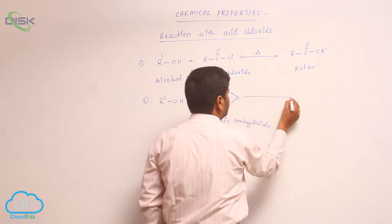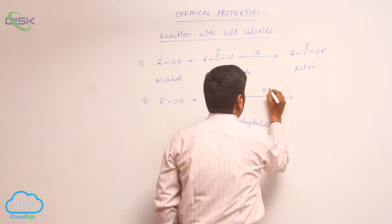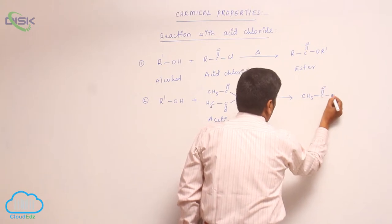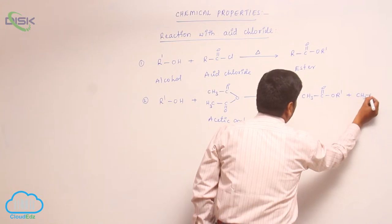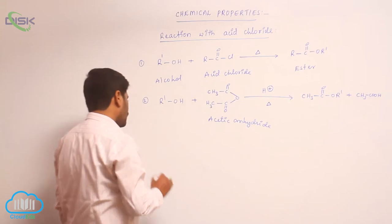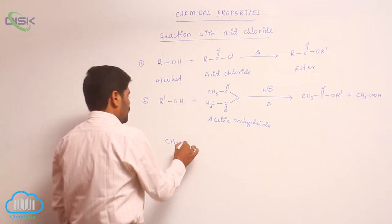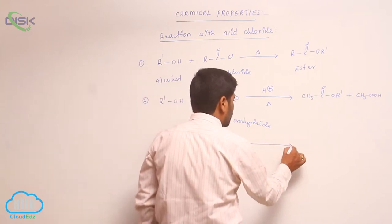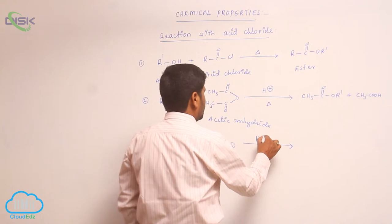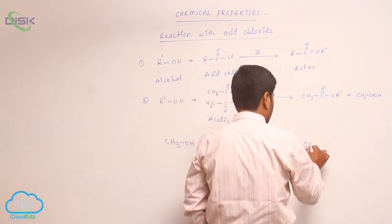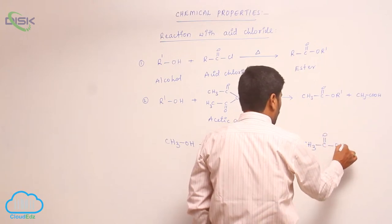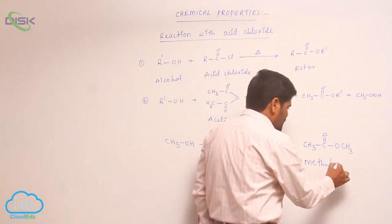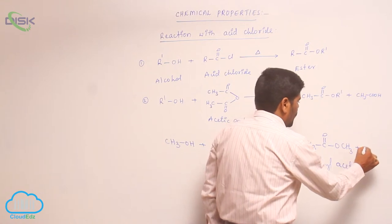Acetic anhydride, in the presence of an acid medium, reacts with an alcohol to form an ester (R-C(=O)-R'), plus acetic acid (CH3-C(=O)-OH), known as methyl acetate and acetic acid as products.